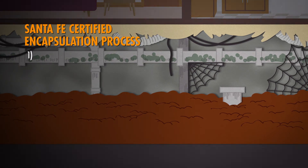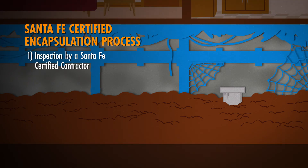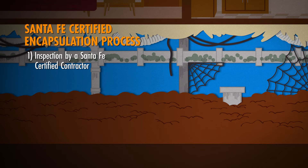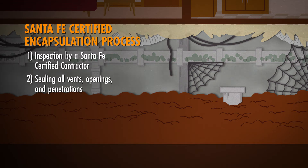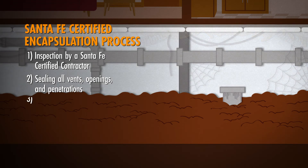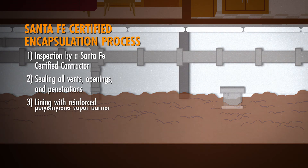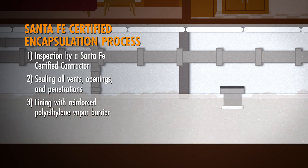First, your Santa Fe certified contractor will inspect the exterior, interior, grating, foundation walls and drainage of your crawlspace. Then, all vents, openings and penetrations are sealed to help prevent the infiltration of outside air and the transfer of crawlspace air into your living space. Next, the foundation sidewalls, masonry piers and the crawlspace floor are lined with a reinforced polyethylene vapor barrier and sealed.